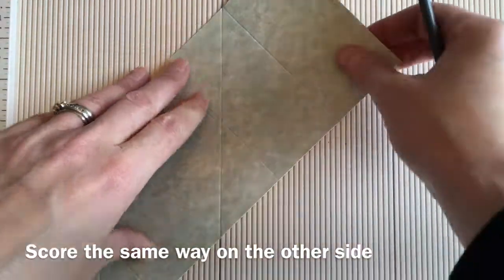And I edged those with some distress ink, just to give them a little bit of a border. And I just kept them subtle because I know they're kind of tucked in there behind, but they have some cute little butterflies on them. And I love the way it just peeks out.